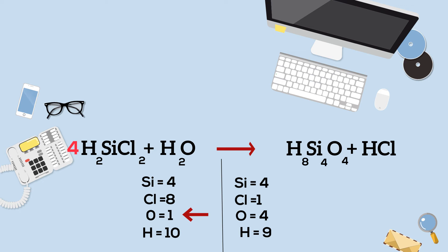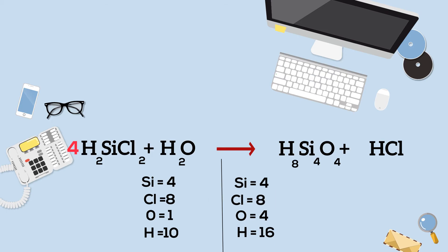So now we have one chlorine on the product side, but eight on the reactant side. So what I can do is multiply HCl by eight.